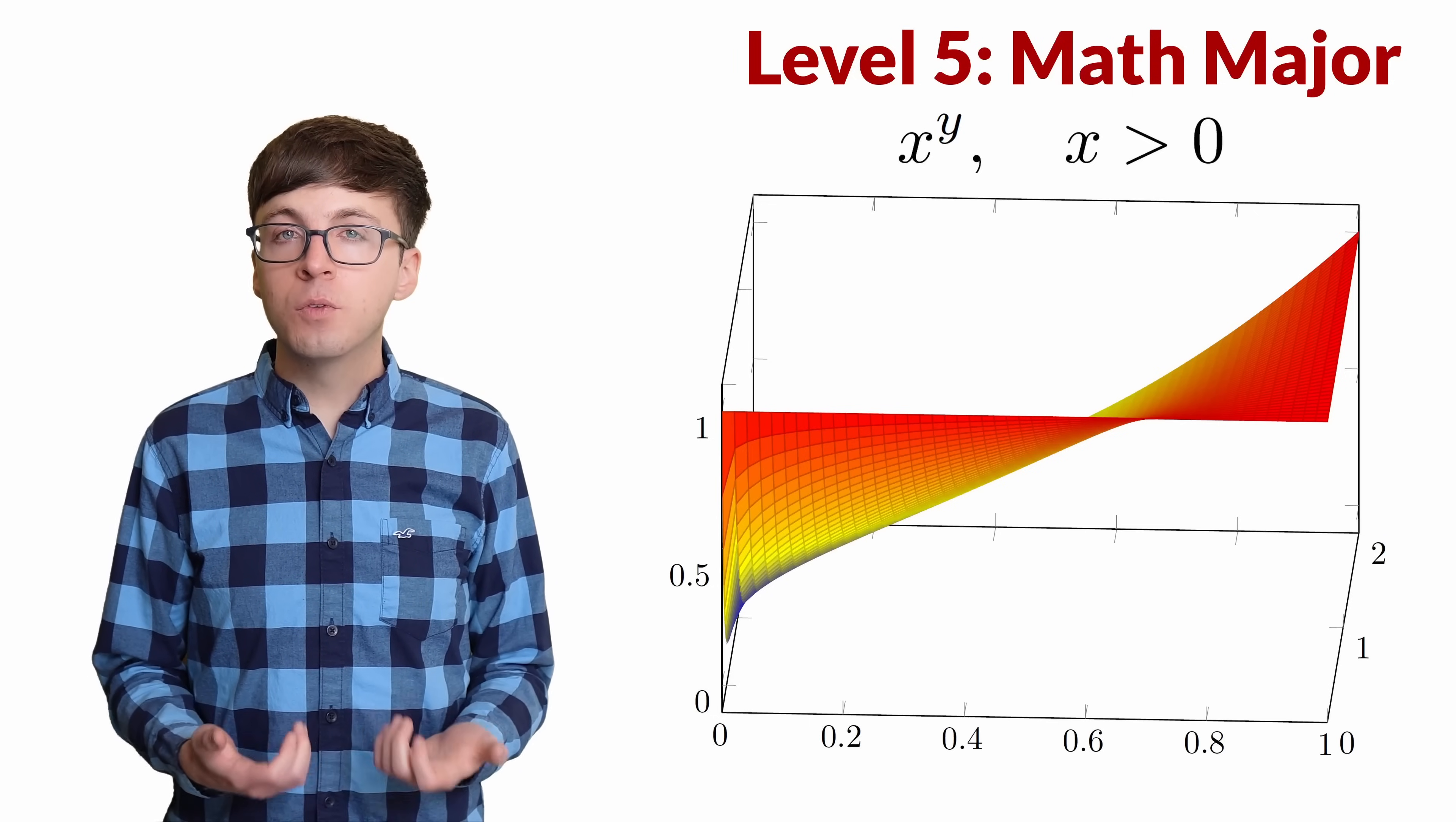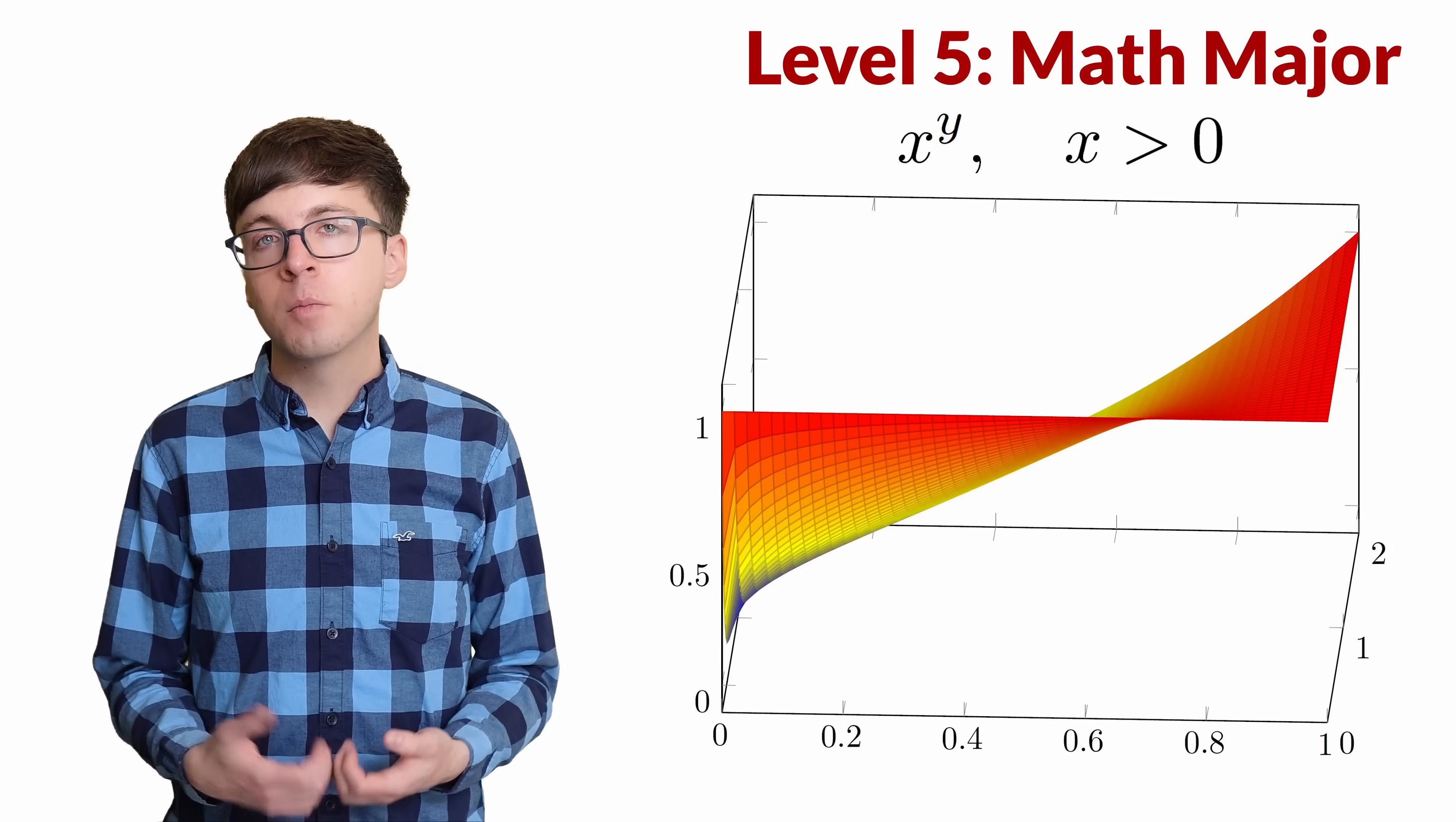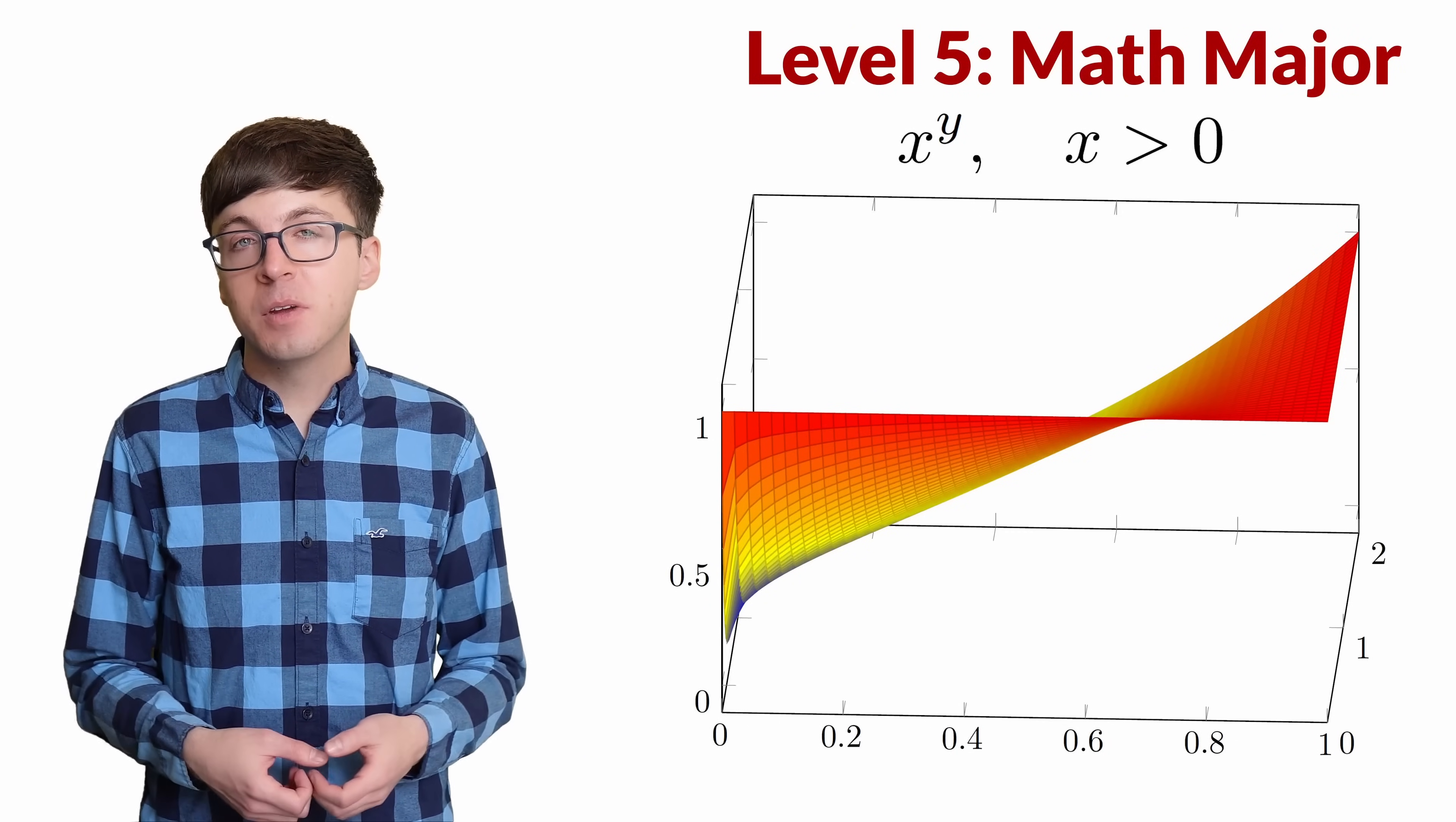Defining 0 to the 0 equals 1 makes sense in a lot of contexts, but it's important to remember that 0 to the 0 is still an indeterminate form for limits. Understanding 0 to the 0 involves mathematical ideas ranging from algebra to calculus and beyond.